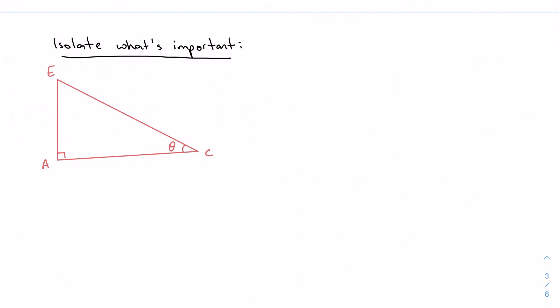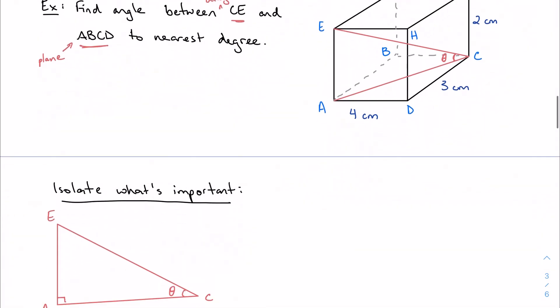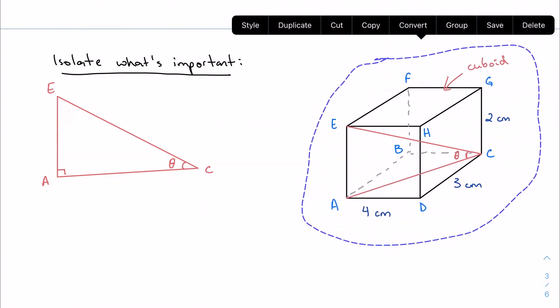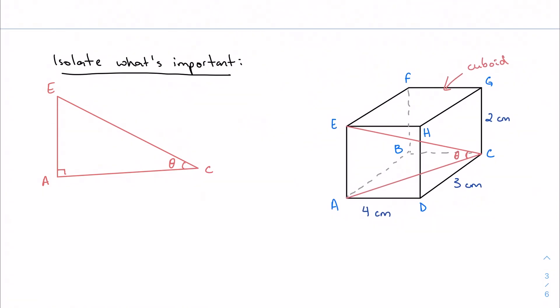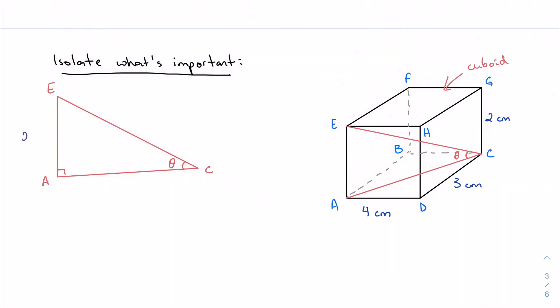Well, if I want to find this angle theta, then I need to know two sides of my triangle. If I know two sides of my triangle, I can use a trig function. Well, let's see if I know any of the sides of my triangle so far, and actually just for the sake of scrolling, maybe I can try to bring this down. Just so I can keep referencing it. Here we go. Well, I know that all of my vertical heights here are two centimeters. So, one thing I do know is that AE is also two centimeters.